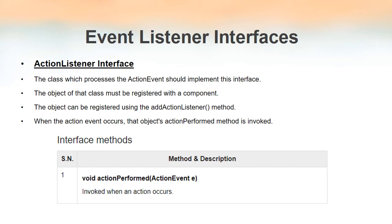We have to create the object of that class which implements ActionListener, and that object must be registered with a component. Then, whenever an event occurs with respect to that component, this method will get invoked. As you can see, the parameter of the actionPerformed method is the object of class ActionEvent. So whenever an action event occurs, the object of that class will be created, actionPerformed will be invoked automatically, and that object will be passed as a parameter. Inside this method we can write the lines of code to perform when that particular event occurs.